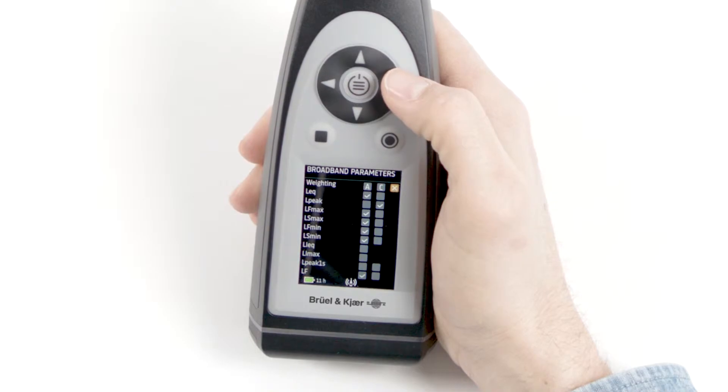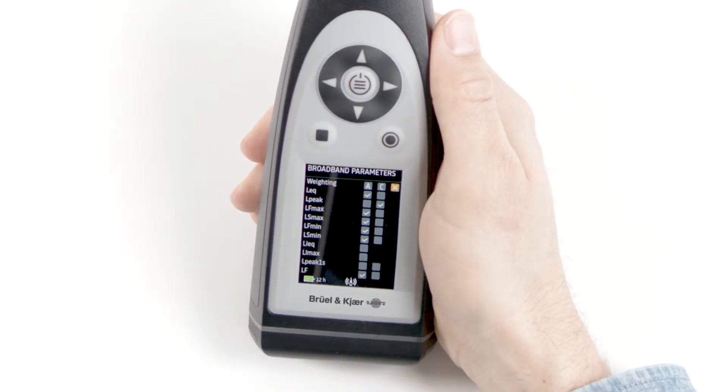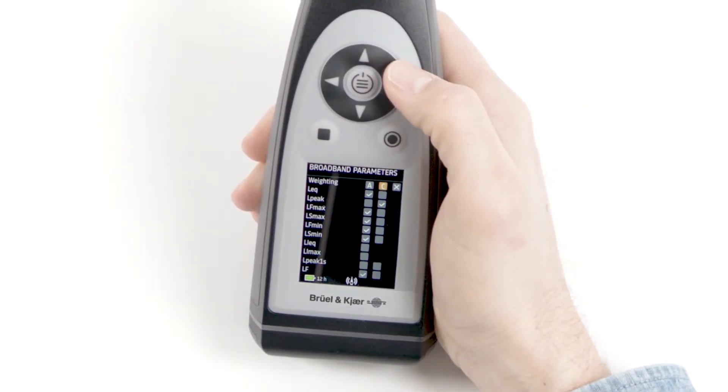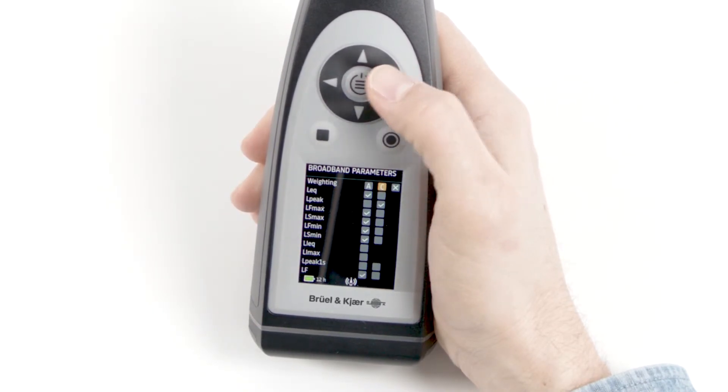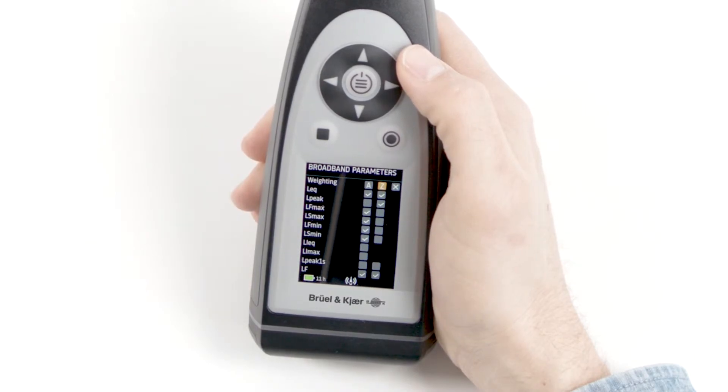Under broadband parameters, I can choose which parameters I want to measure. I can change the frequency weightings by moving my cursor over the frequency weighting and pushing the center button.